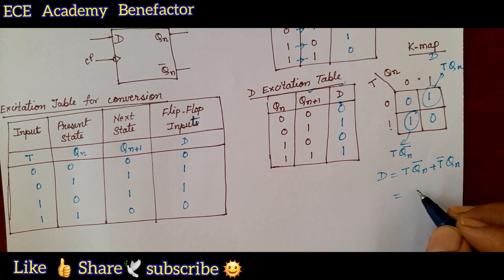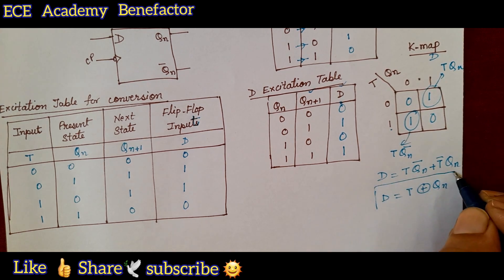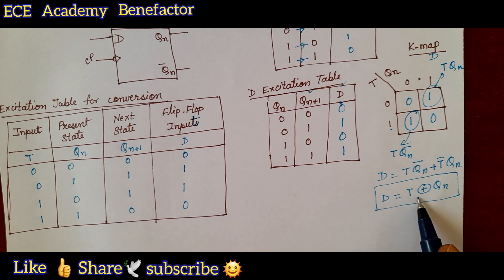What is the D equation coming to be as T Q n bar plus T bar Q n. What it is equation for XOR gate T XOR Q n. This is the D equation we got.